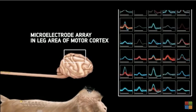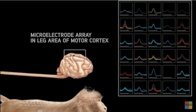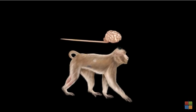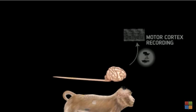The monkeys also received a microelectrode implant into the leg area of the motor cortex. Wireless modules allowed us to record the spiking activity from the motor cortex in real-time without constraining tethered connections.